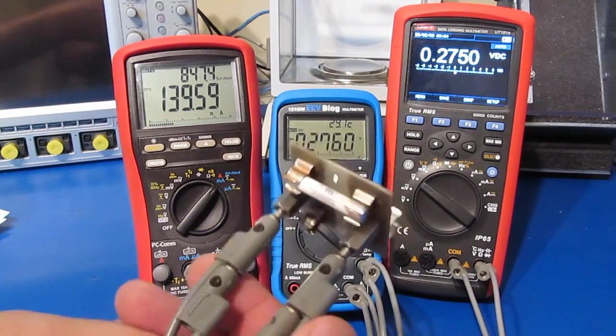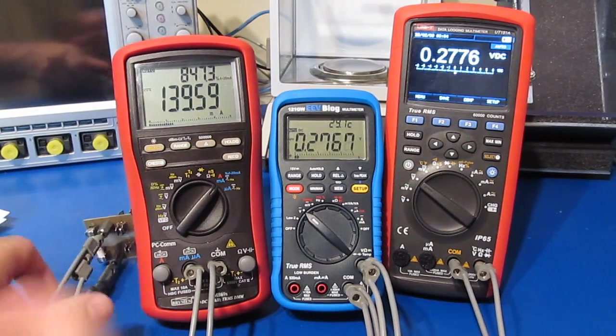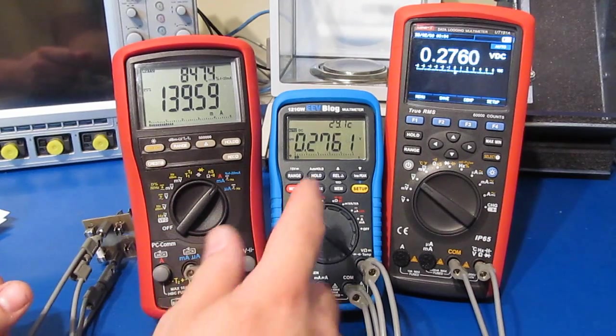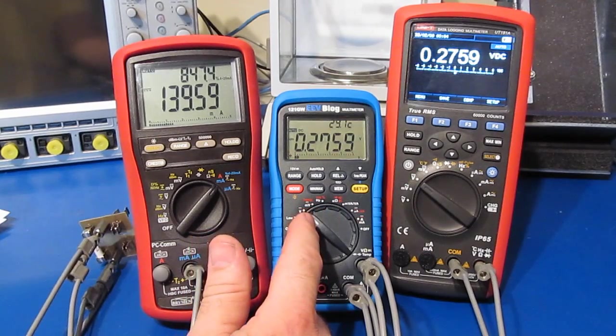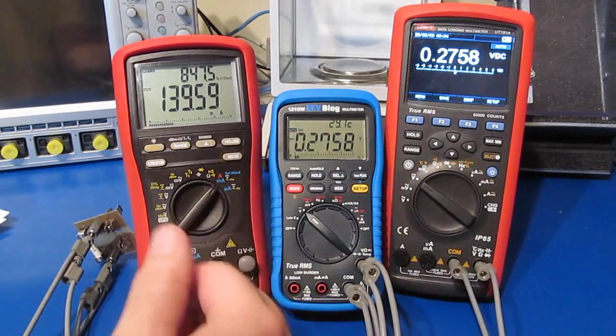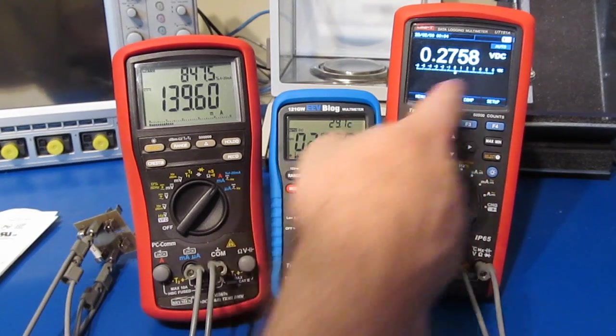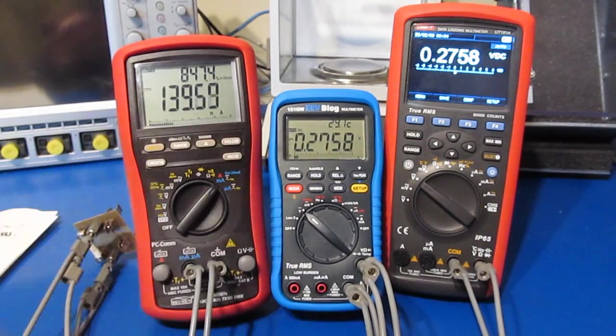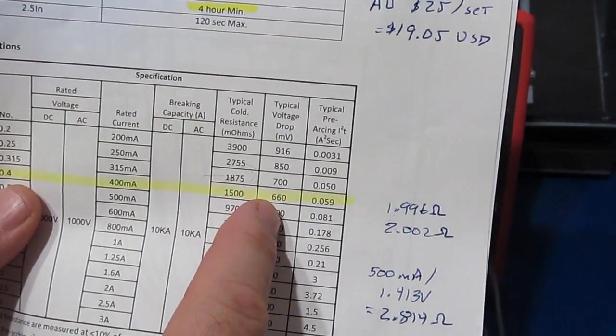Alright so this is roughly one minute now, so here you can see we have the ASTM fuse installed in our test fixture. Once again the Bremen is looking at the current through the fuse and I have the 121 GW pre-production meter in the center looking at the voltage drop across it, and that's in parallel with our UT 181 so these two meters should be reading the same value. And again this will be the current through the fuse, so what I'm interested in is looking at the typical voltage drop for the fuse.